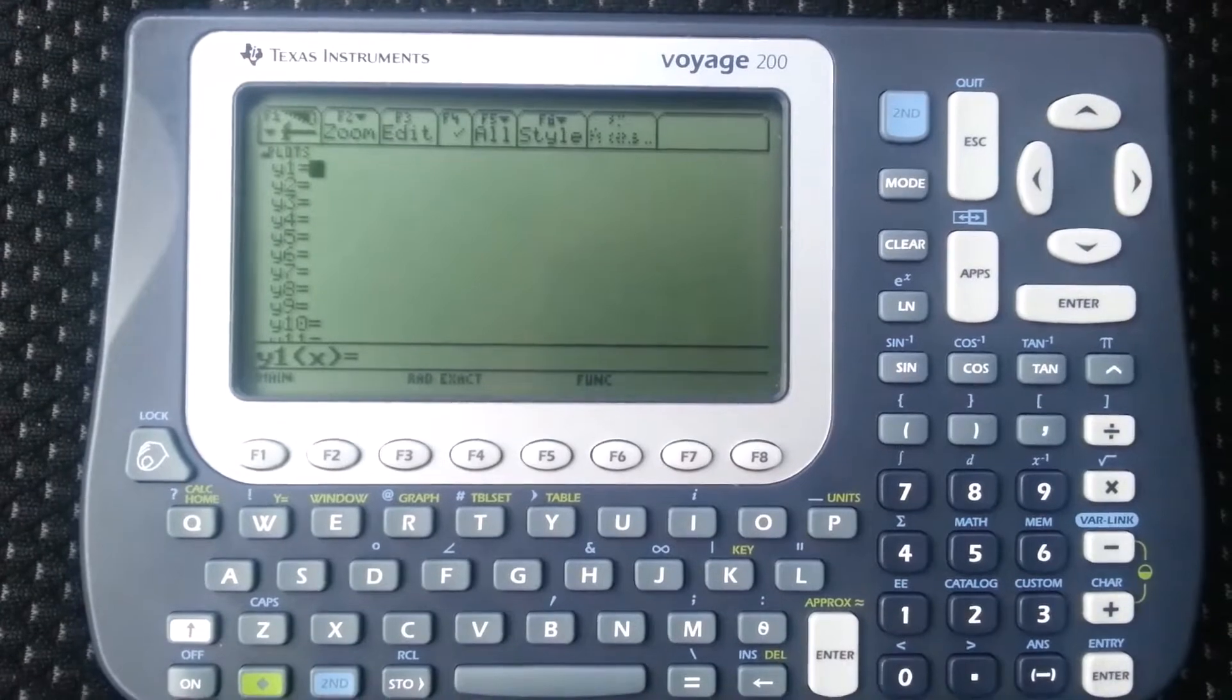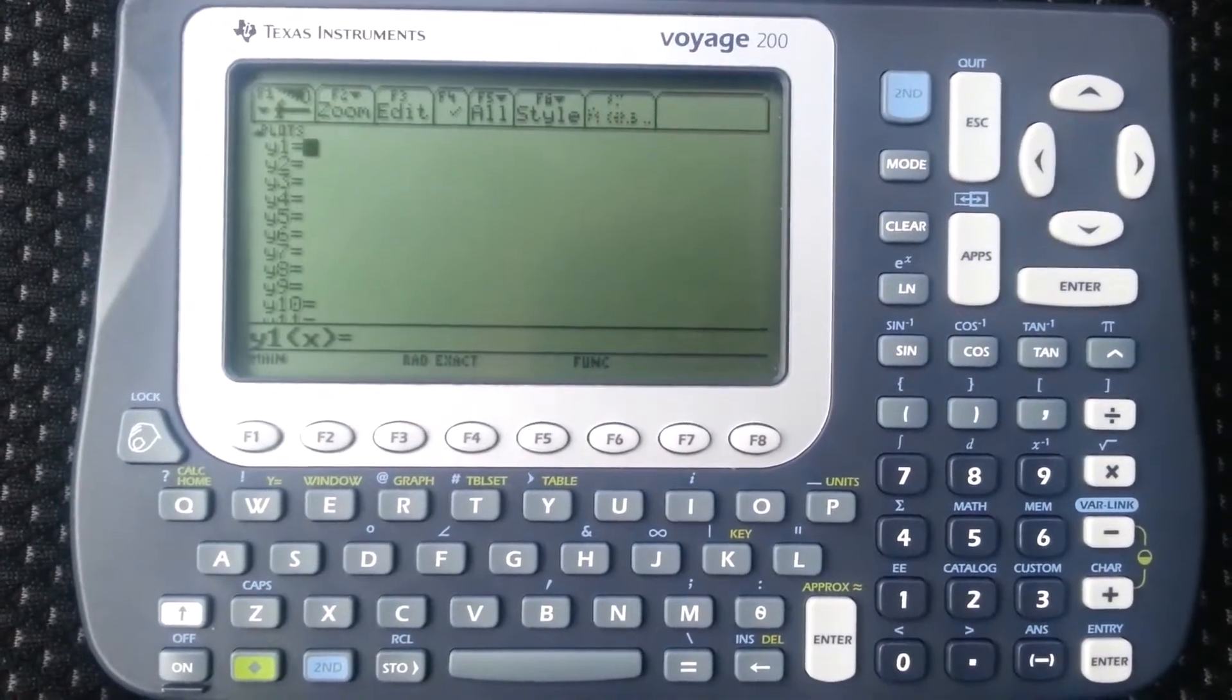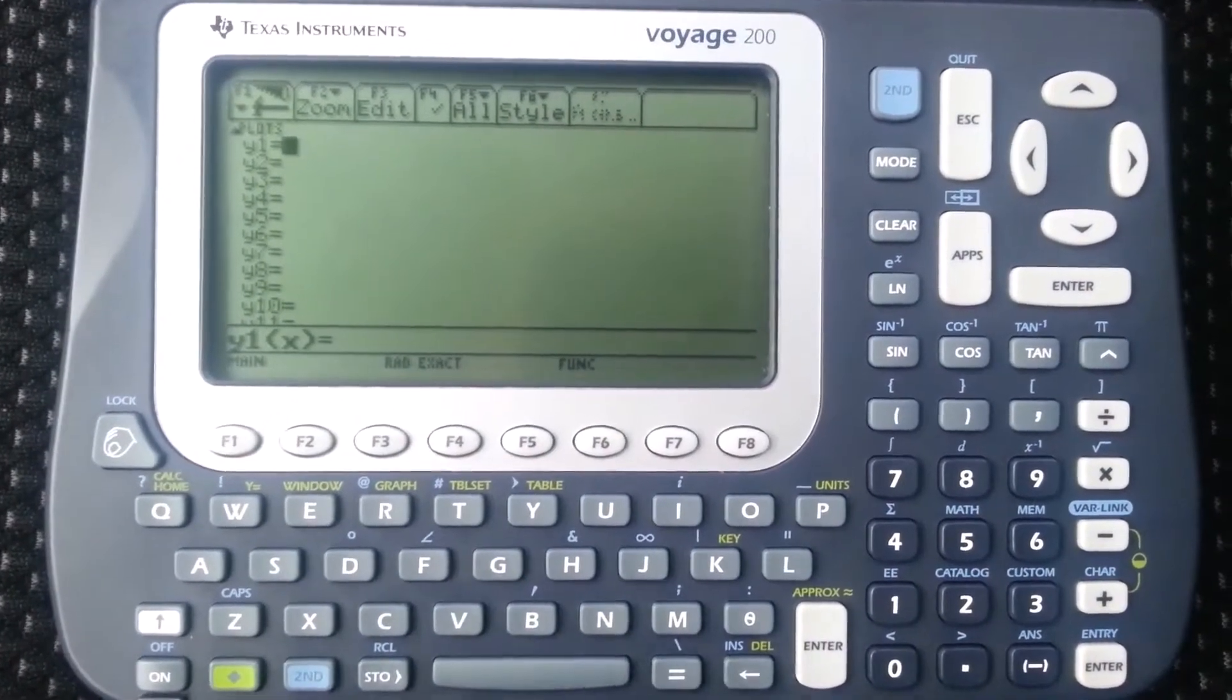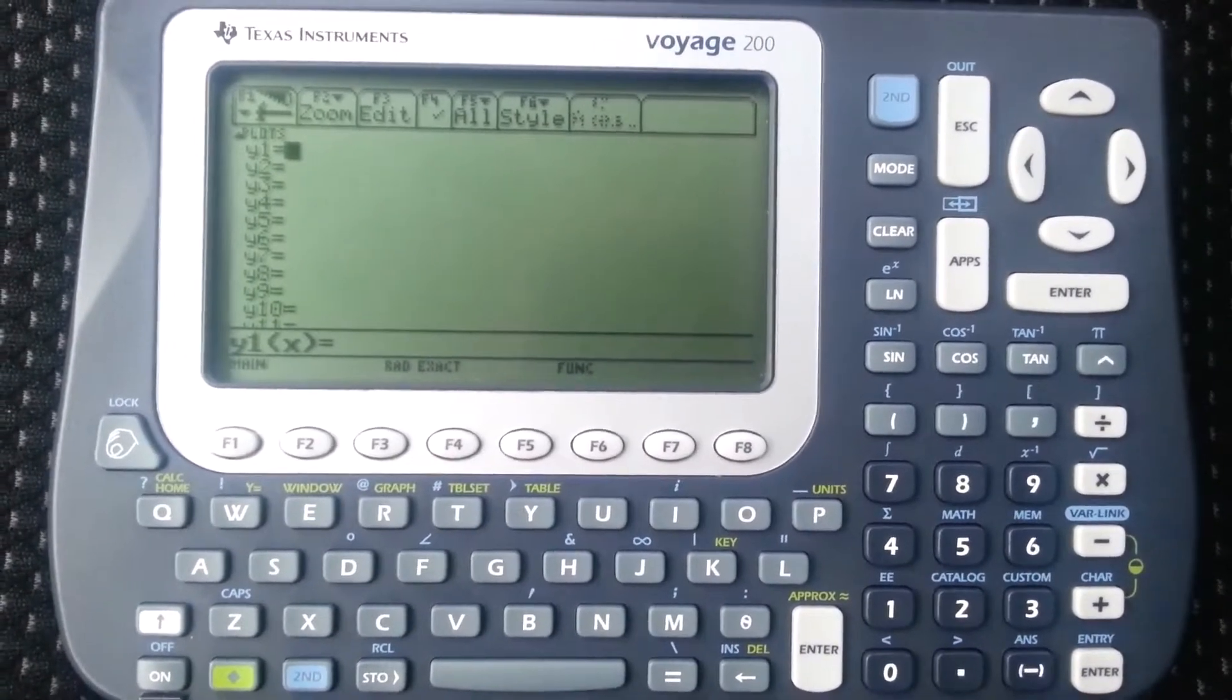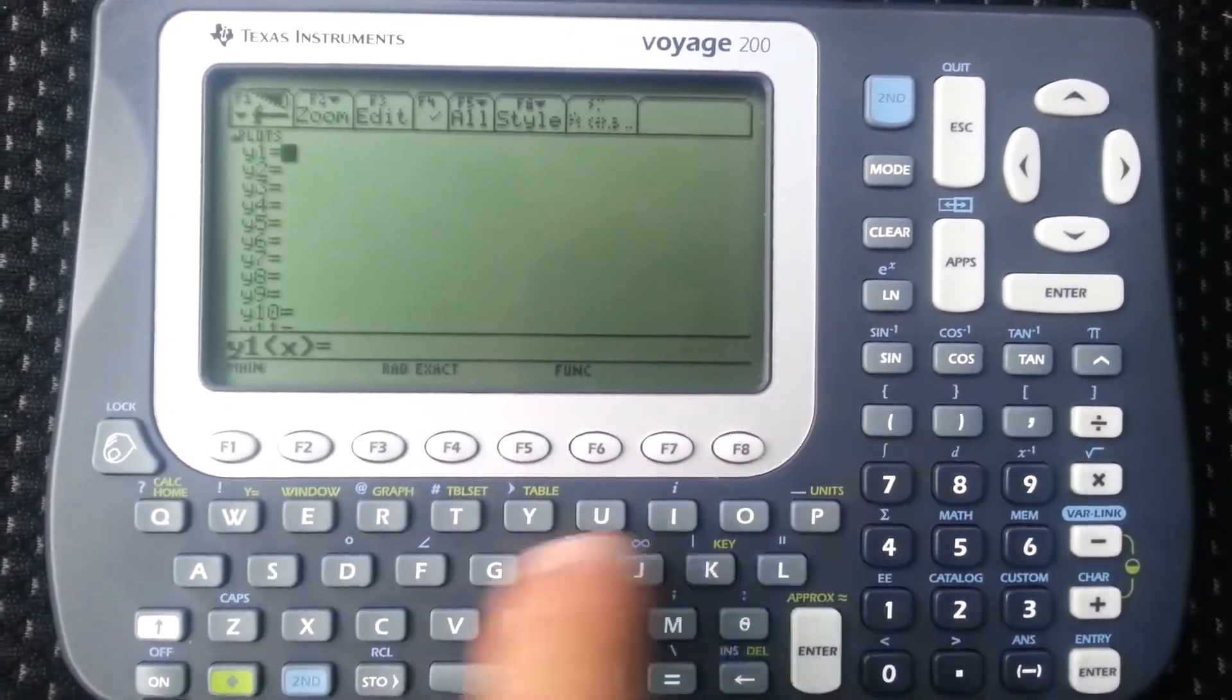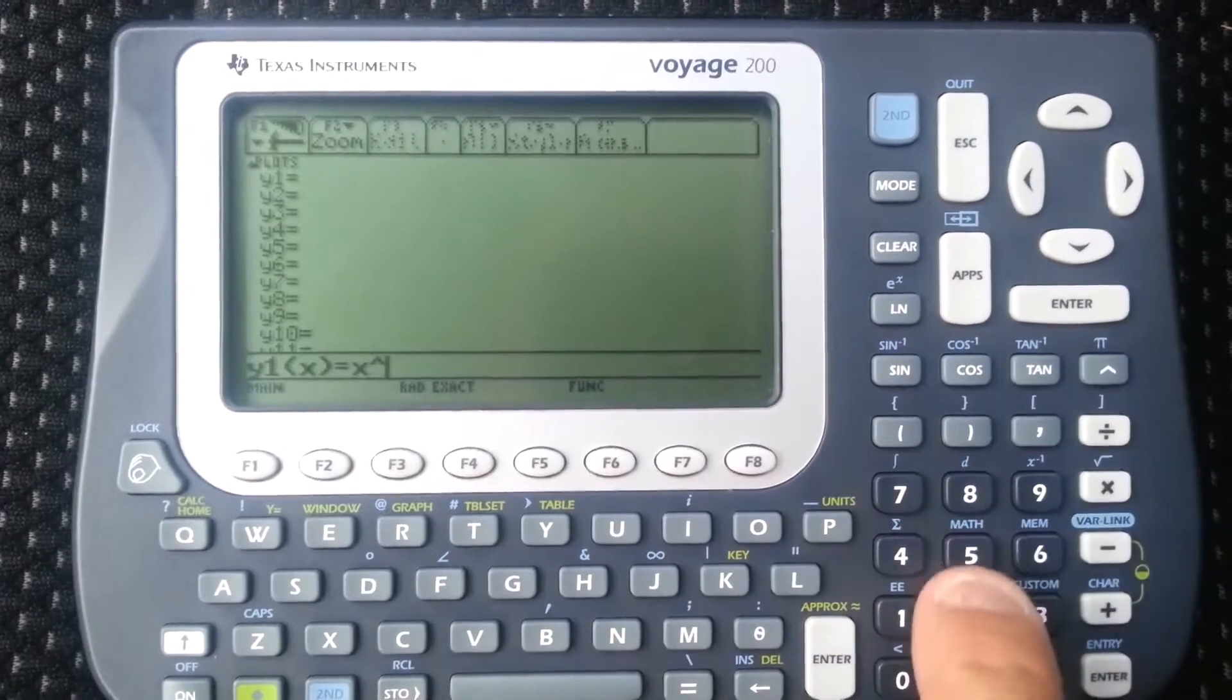This is function mode, which is kind of a misnomer because the other modes are functions too, but this is like the 2D graphing. So say you have x squared or something like that.